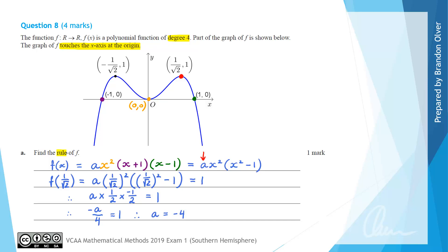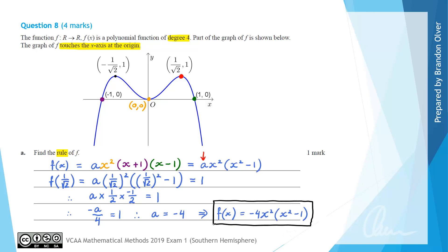The question asks for the rule of f, so we substitute the value a = −4 into the rule we already had. Therefore f of x is going to equal minus 4 times x squared times (x squared minus 1). That is our final answer for part a.